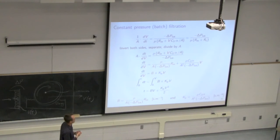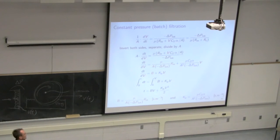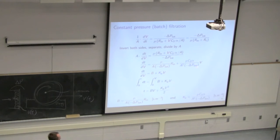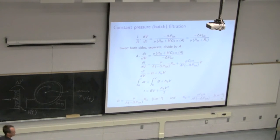Consider the situation of constant pressure. If delta P is constant, then viscosity is constant, alpha is constant because alpha is a function of delta P, slurry concentration is constant, and area is constant. So all those terms in blue are a constant which I'll call KP. Similarly, all the terms associated with the medium resistance are constants, which we create as a new variable B. So in a constant pressure situation, the only thing actually changing with time is the rate of liquid coming out of the filter.